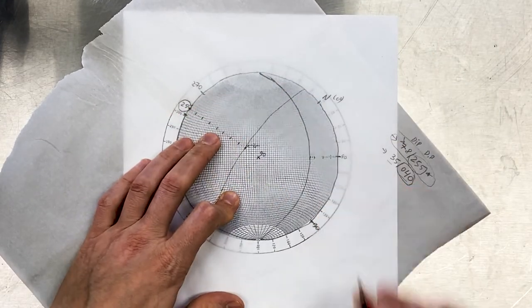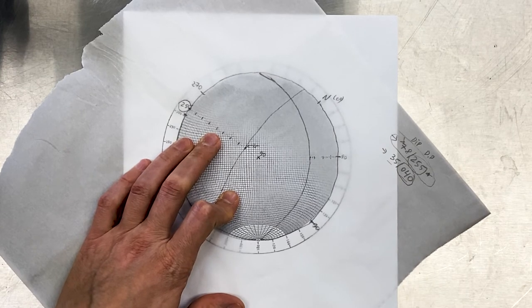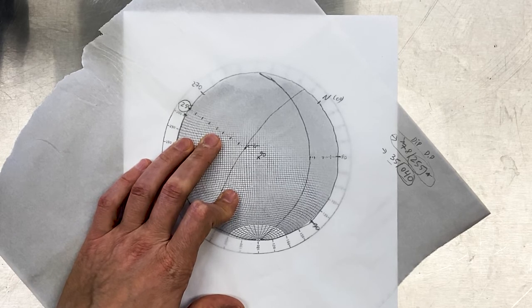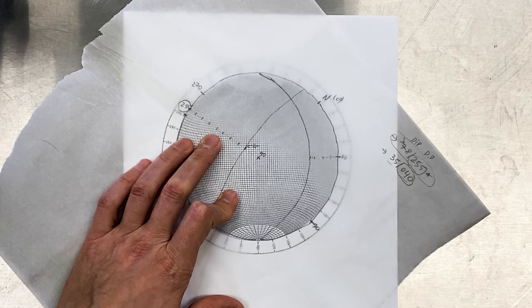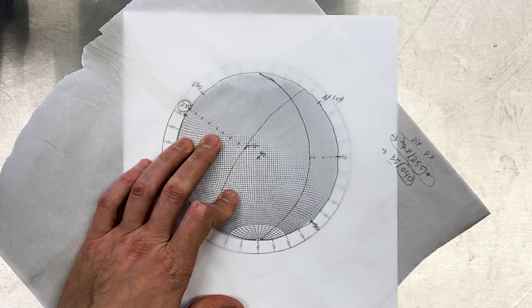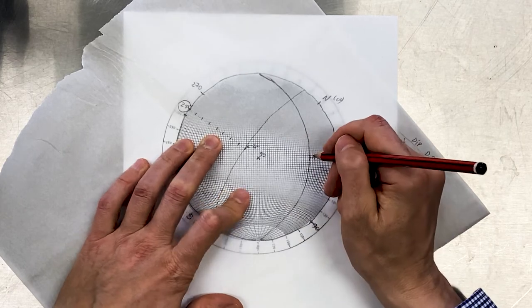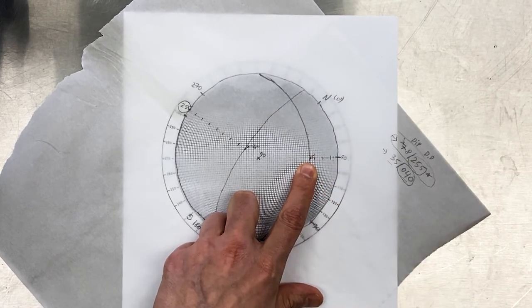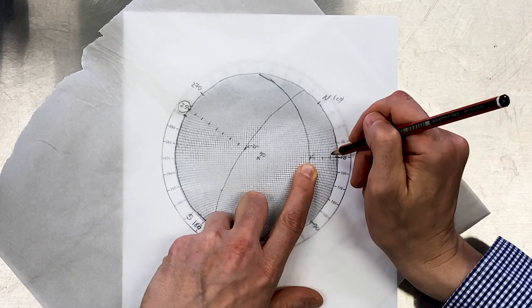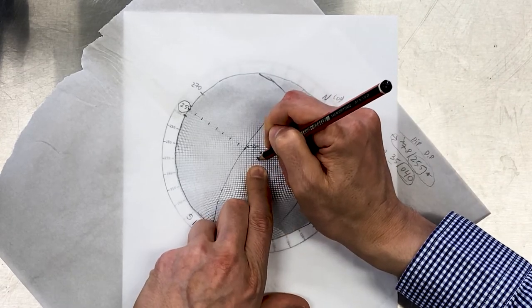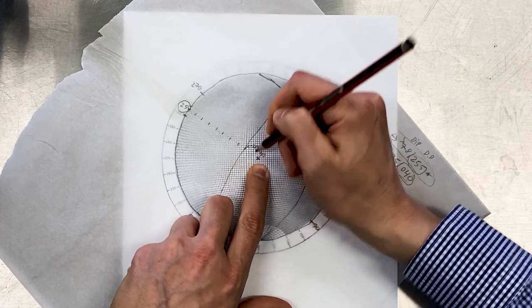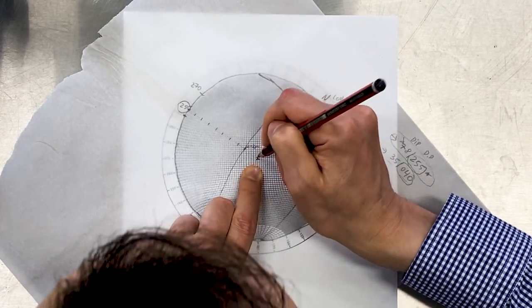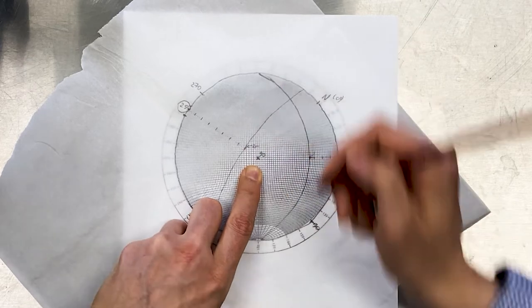So this is going to be a second great circle that would represent a joint with dip of 35 degrees and dip direction of 40 degrees. Instead of drawing great circles, we can just draw one point, which is called pole. To do that, we will need to count 90 degrees from this point that we already used to identify our second joint. So what we can do is, if we know that the center is 90 degrees, we just count 35 from the center because the dip is 35. And that will give us a pole for the second joint.